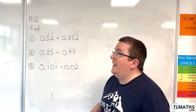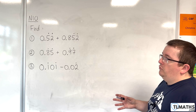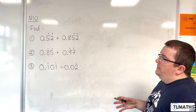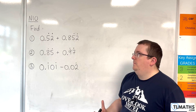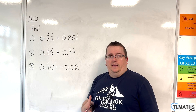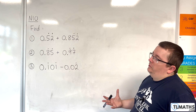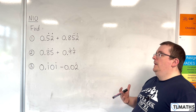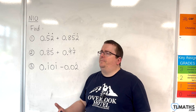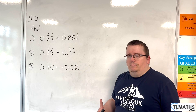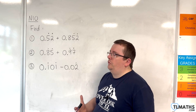In this video, we're going to be looking at how we can add or subtract recurring decimals. Your gut feeling might be that the way I'm going to suggest you do this is to convert into fractions and then add or subtract the fractions as necessary. And yes, that will work. The fractions that you can get might be quite nasty to deal with, but we will take a look at that as we go through these three examples.